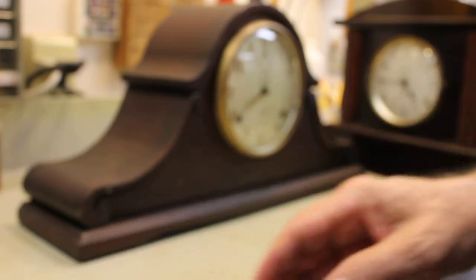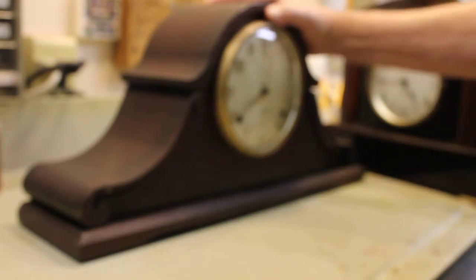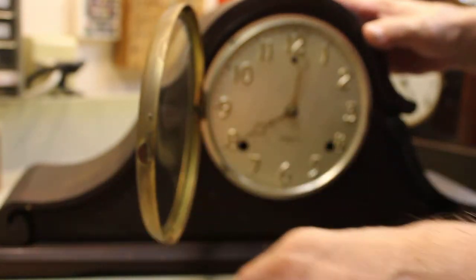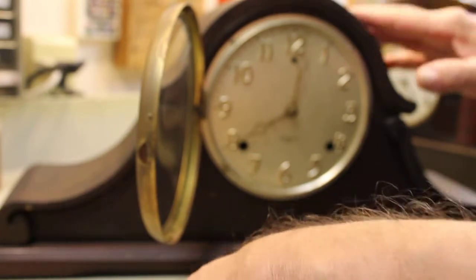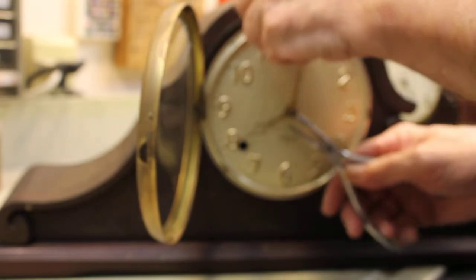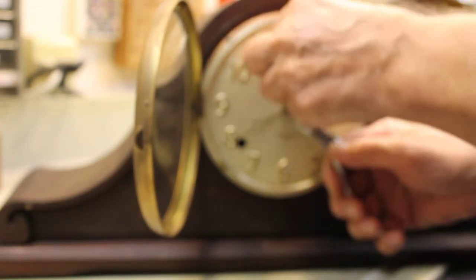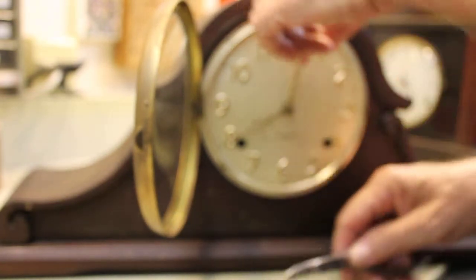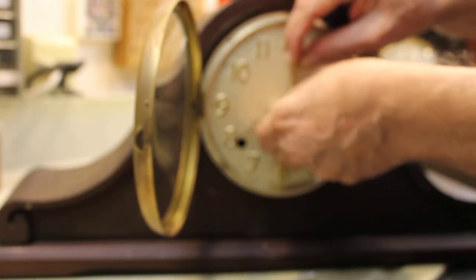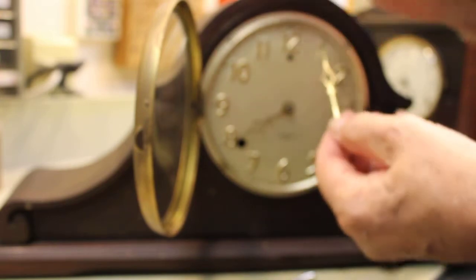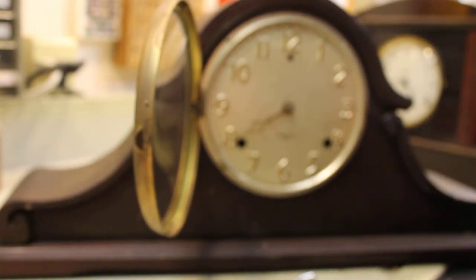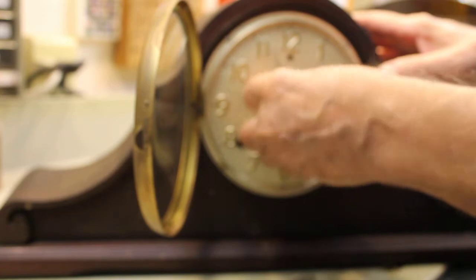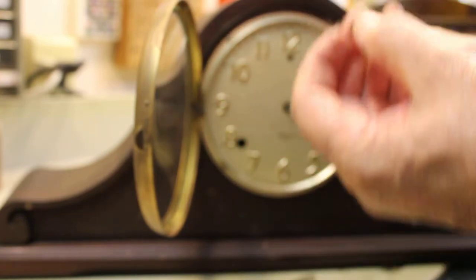First thing you need to do is take the hands off. I believe your clock has a pin that holds the hands on. Just in case it doesn't, this clock has a nut. All you have to do is hold the minute hand, figure out which is the minute hand, and just turn the nut enough to loosen it. Take the nut off and then the minute hand will just fall off. And then the hour hand, it just slips on there, so just kind of turn it back and forth and pull out and then it comes off.